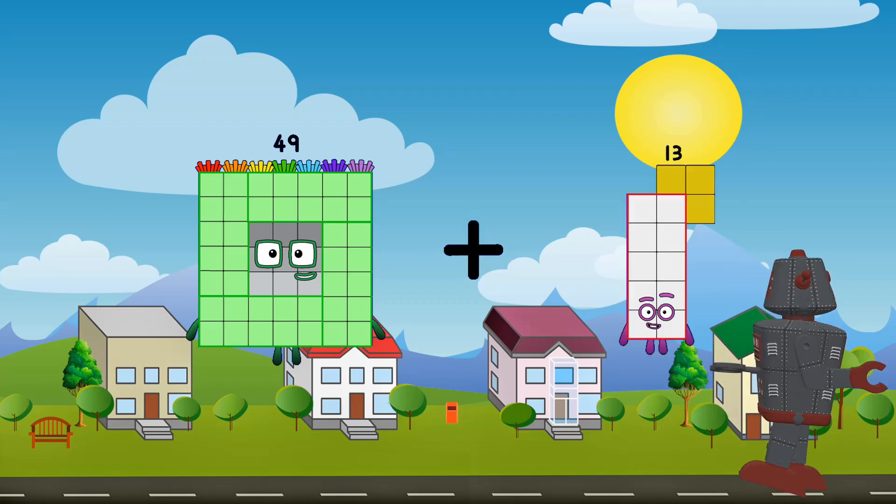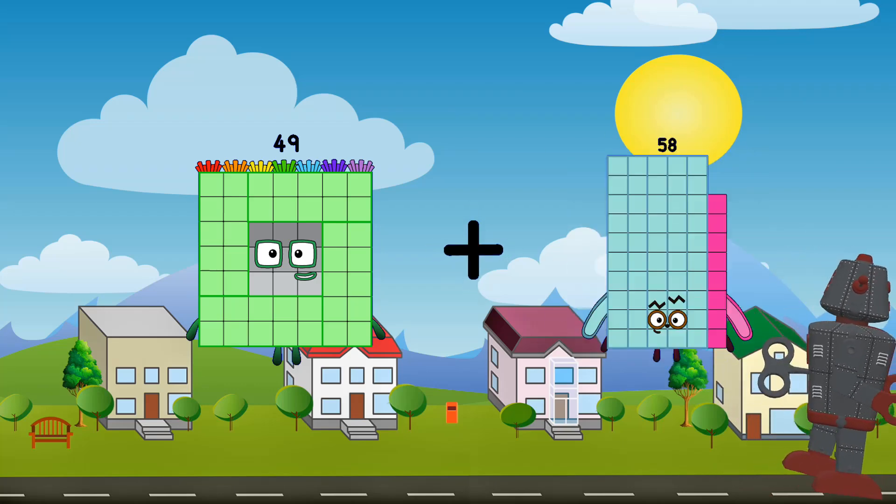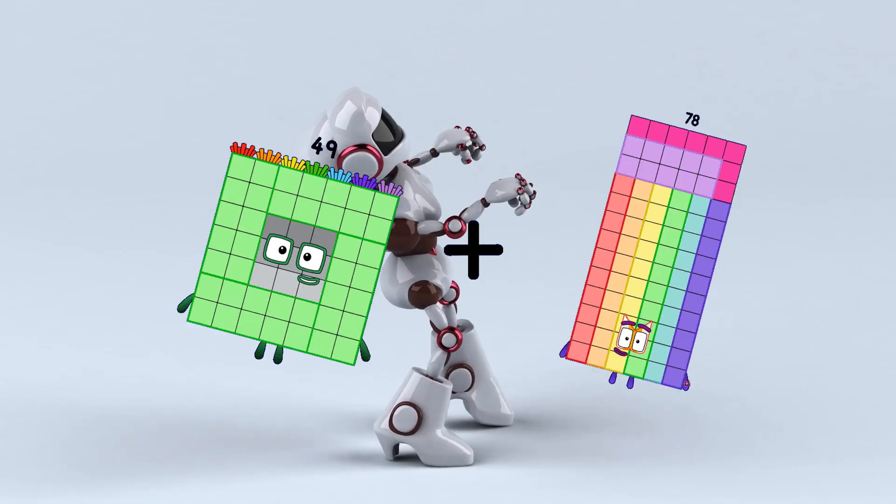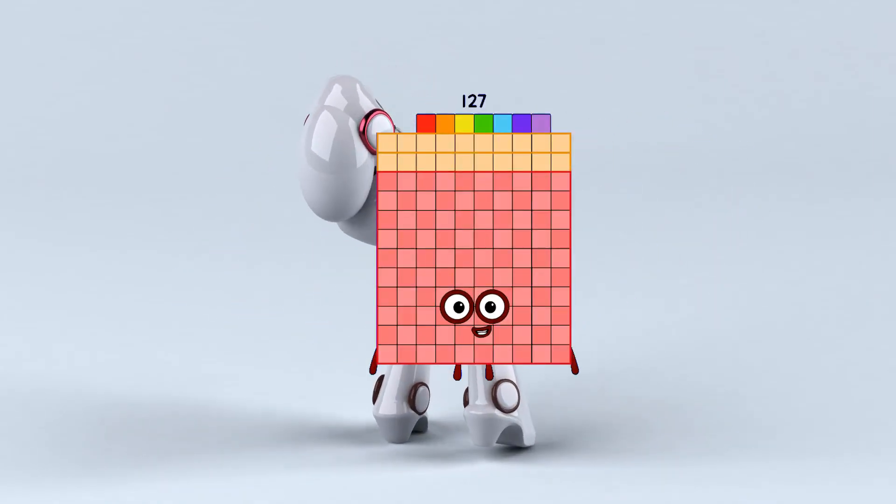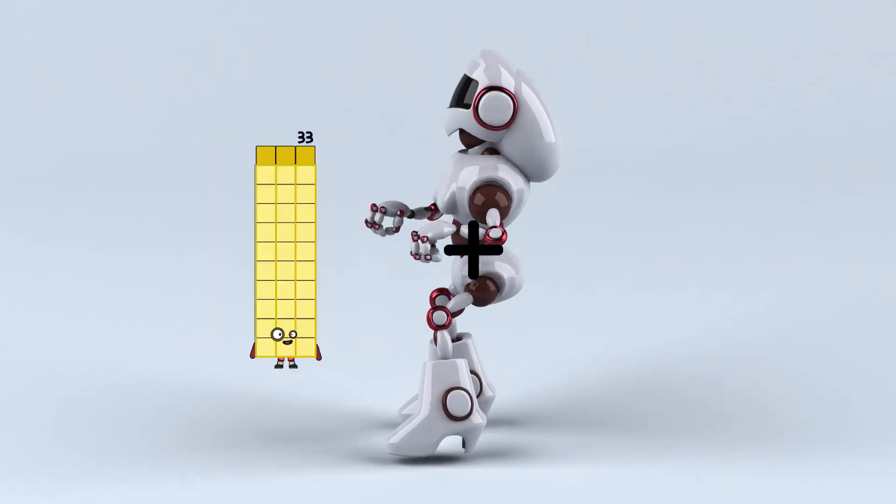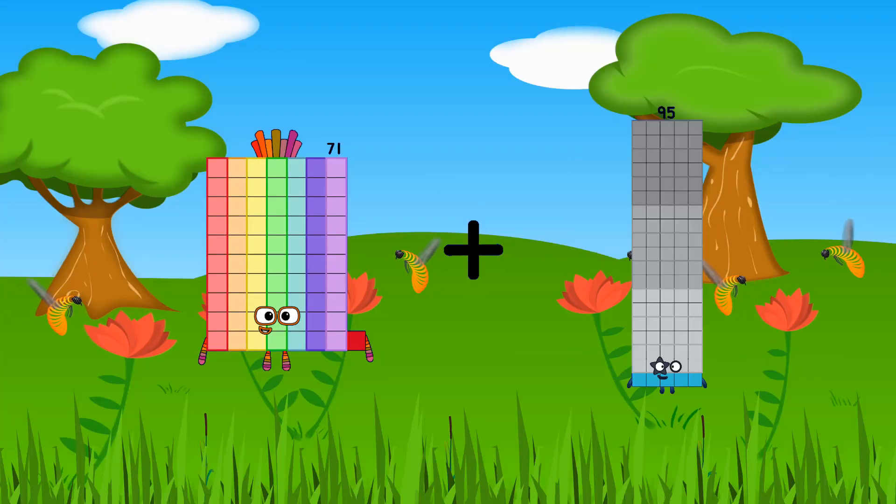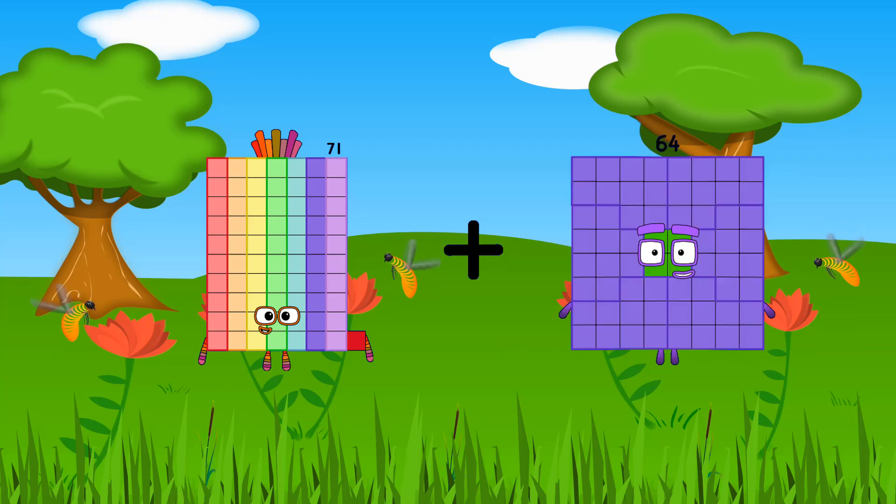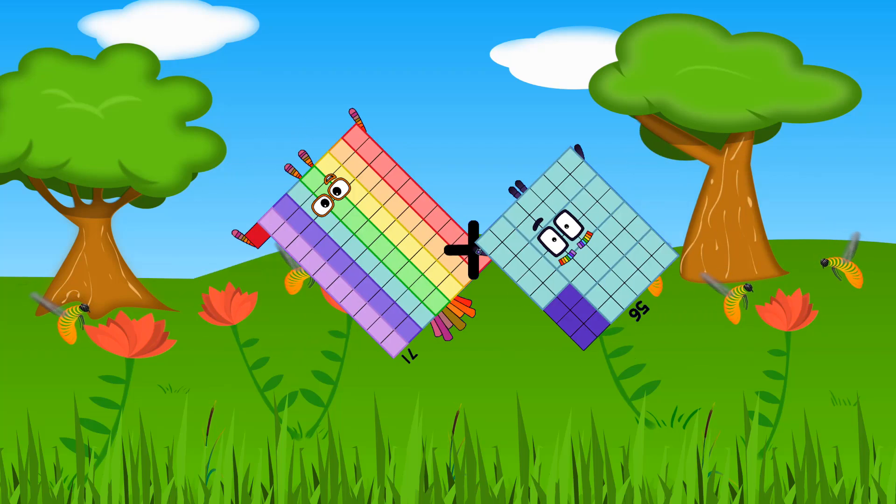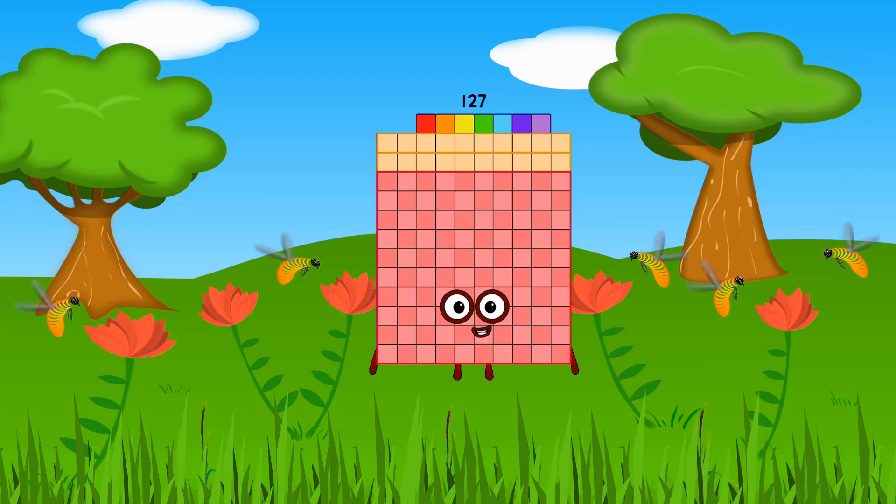49 plus 78 equals 127. 71 plus 56 equals 127.